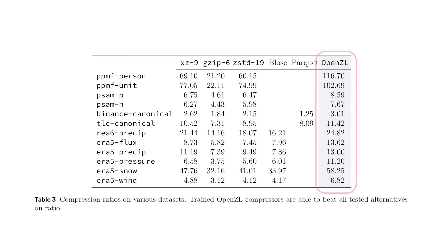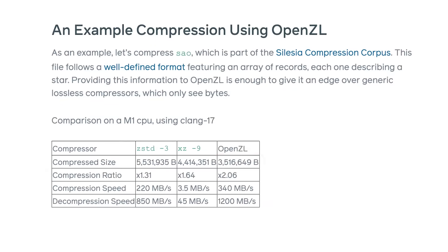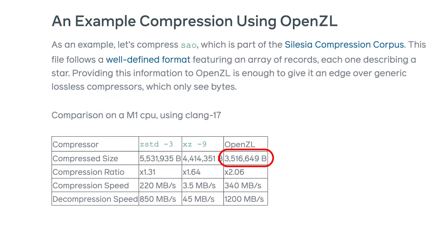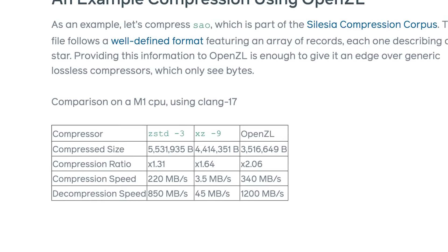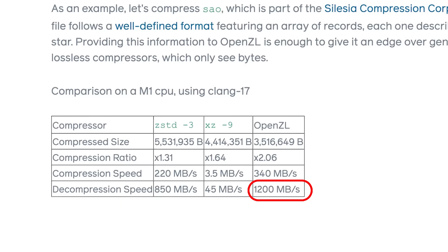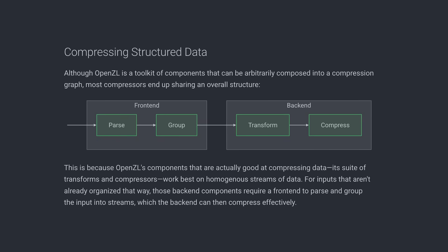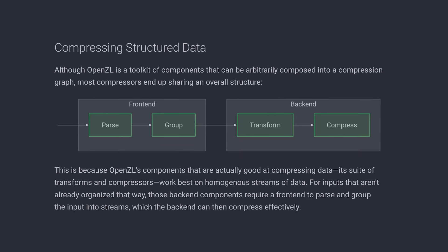Here's the fun part: performance. On structured datasets, OpenZL beats general compressors by a wide margin. In one of Meta's tests, OpenZL reduced data from 5.5 megabytes down to 3.5, while compressing at 340 megabytes per second — faster than ZStandard's 220 — and decompressing at over 1.2 gigabytes per second.